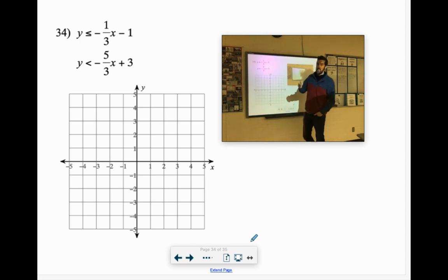y is less than or equal to, solid dot, shape below or solid line, sorry. Negative one third x minus one. We'll start at our negative one, our slope is negative one third, so we'll go down one over three. So it's solid line.